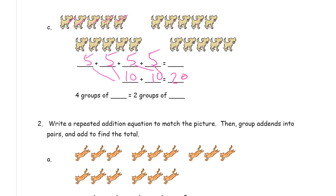And you can also count by fives. Five, ten, fifteen, twenty. Four groups of five. That's all of these up here. Is the same as two groups of ten.